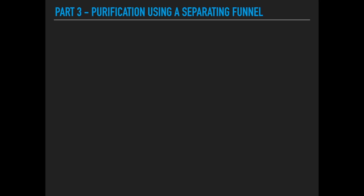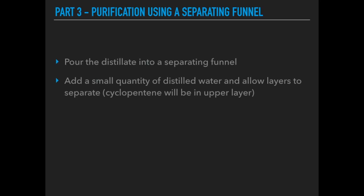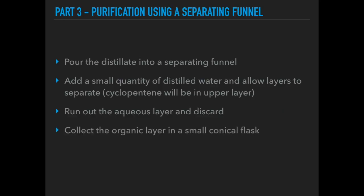For part three, purification using the separating funnel: pour the distillate into a separating funnel. There may be water-soluble impurities in the product, so add a small amount of distilled water and allow the layers to separate. Cyclopentene will form the upper layer because it is less dense than water. The impurities will be in the lower aqueous layer — run that out and discard it. Then run out the organic layer and collect it in a small conical flask. Because there may still be a small trace of water in the product, add a drying agent — anhydrous calcium chloride.